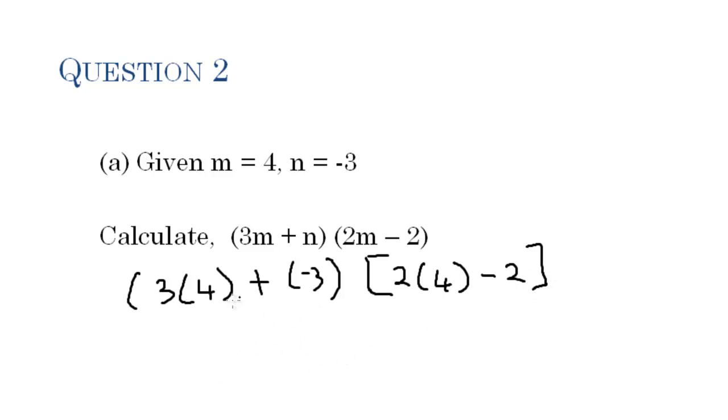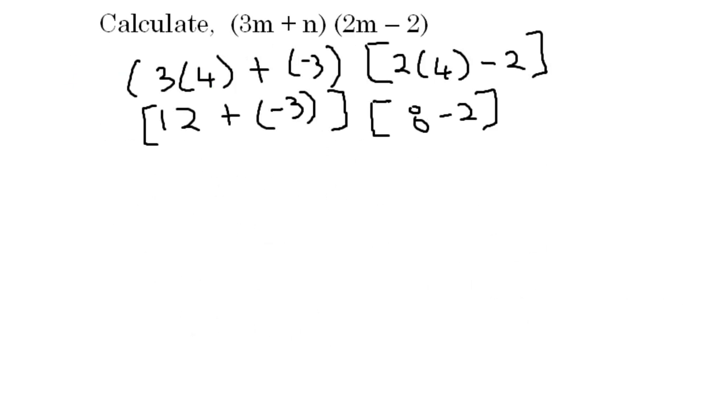Now, let's simplify. 3 times 4, that's 12. And that's plus minus 3 right here. So that's plus minus 3. That is in this bracket. In this bracket we have 2 times 4, that's 8, and we have that minus 2. So, let's simplify it even more. That is 12 minus 3, that is 9. And in this bracket we have 8 minus 2, that is 6. Now 9 times 6, that is 54. And 54 is our answer.